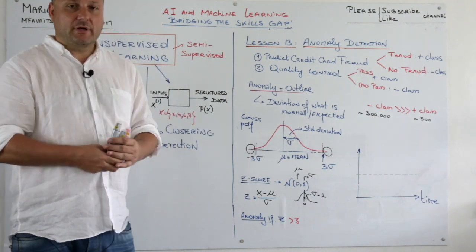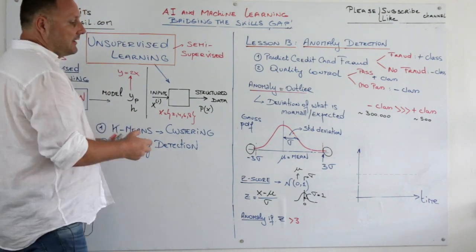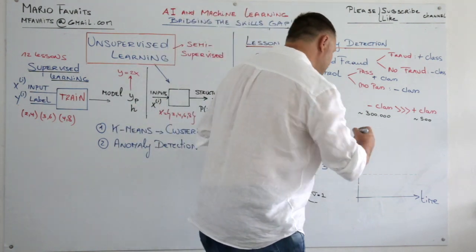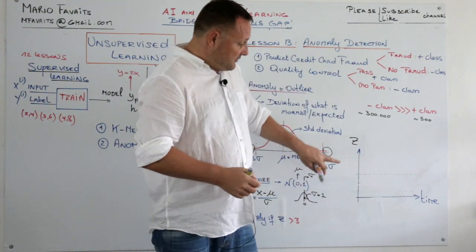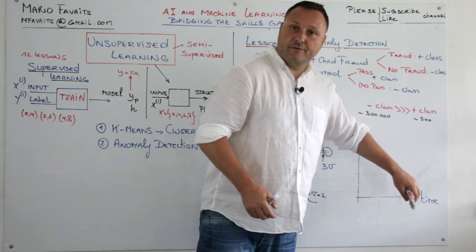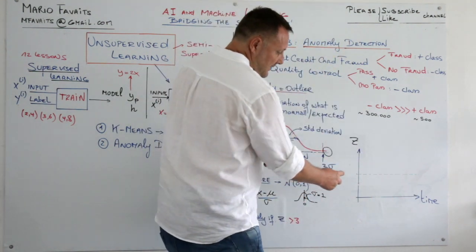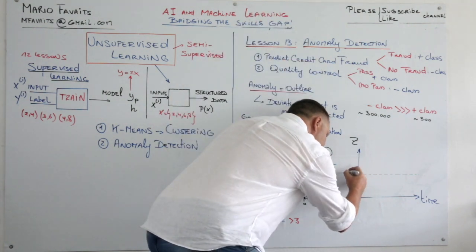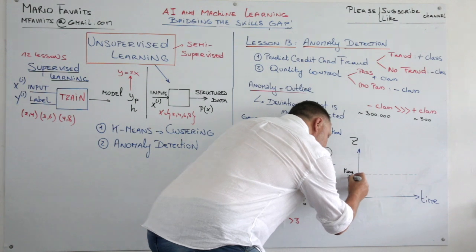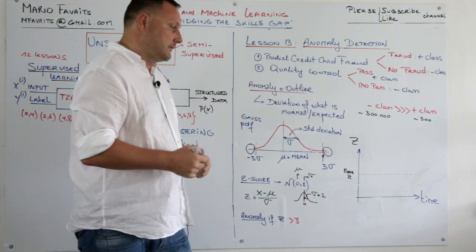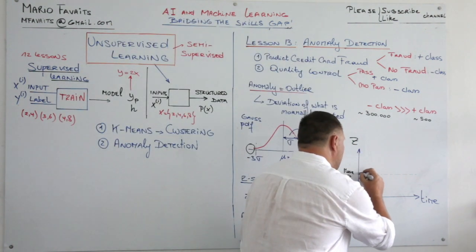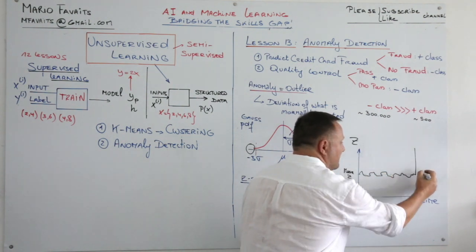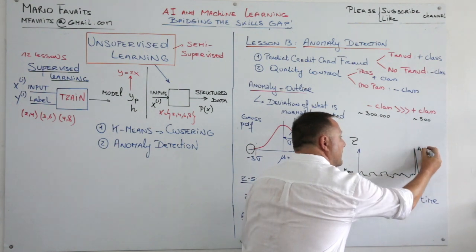Now in reality when you look at a production process there is a continuous flow of data. So you have actually here you have your z-score and you measure your z-score as a function of time. This striped line here is your average z. So this is the mean of z or the expected value. And you will have your stuff fluctuate around this. And here maybe you have something like this. And this would be your anomaly.